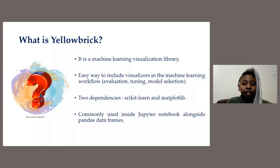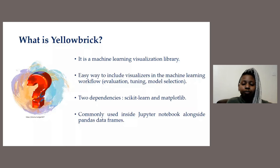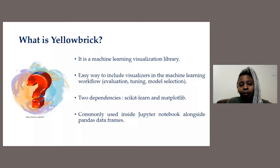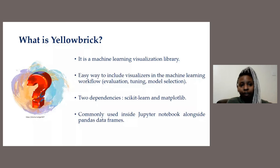The library has two dependencies: scikit-learn and Matplotlib. So if you're installing the library, those would have to be installed along with it if you don't have them. It's also used inside Jupyter notebooks alongside pandas DataFrames, but can also be used with other IDEs such as Spyder. The recommended installation as per the Yellowbrick documentation is just through pip install yellowbrick, and you can upgrade it the same way with the addition of the -U flag. If you're using a Python distribution such as Anaconda, that would be the way to install it.